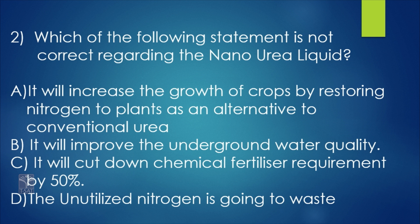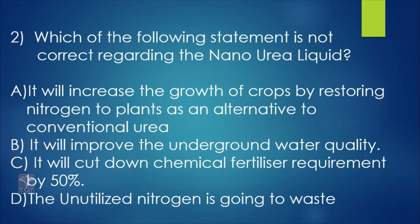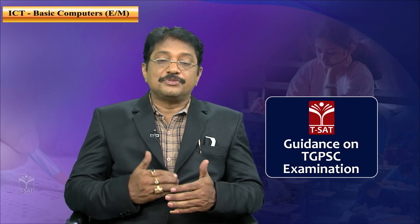Option A is correct — nano urea increases growth of crops by restoring nitrogen. Option B is also correct — it improves underground water quality. Option C is also correct — liquid nano urea reduces usage of conventional urea by 50 percent or more. But option D states the unutilized nitrogen is going to waste — that is a wrong statement, because actually the unutilized nitrogen is stored in the plant and released later. So option D is not correct, meaning D is the correct answer to the question.